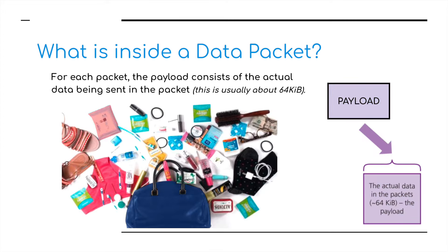The next thing we need to look at is the payload. This is quite simply what is inside the packet — what those 64 kibibits of data look like and what information is stored in this particular data packet.